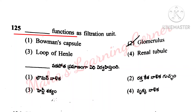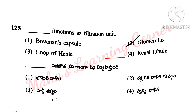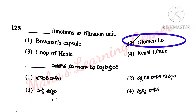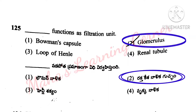Dash functions as filtration unit. Options: Bowman's capsule, glomerulus, loop of Henle, renal tubule. Correct answer is option 2: glomerulus.